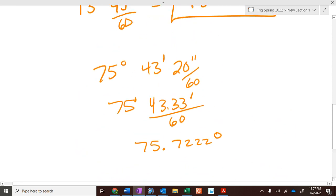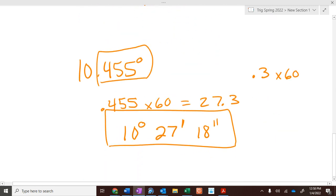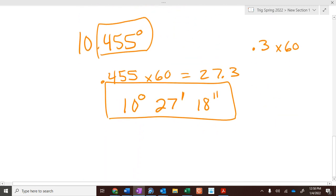So, up here, we're dividing by 60. Here, we're multiplying the decimal part by 60. So, hopefully, you can do that.